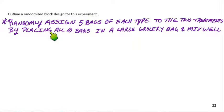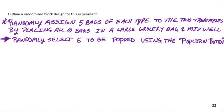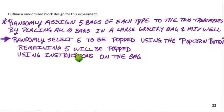That typically takes care of, you know, we get all the different, like say we get one good bag, one bad bag. If we're randomly assigning, it takes care of those naturally occurring phenomena. So in doing that, we randomly select five bags to be popped using the popcorn button. The remaining five, they're going to be popped using just the instructions on the bag.